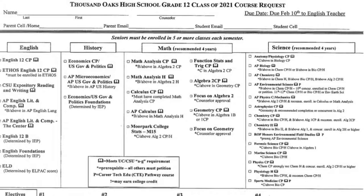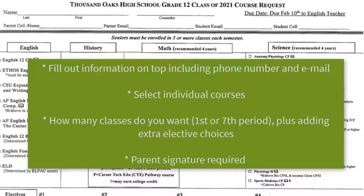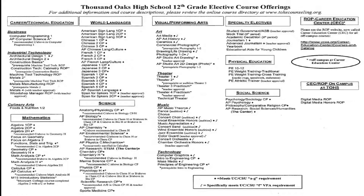Here is an example of a course request form. At the top of the form, please remember to include a phone number and email. You will then go through the form and choose your individual classes. 12th graders are required to have at least five classes; 9th, 10th, and 11th grade students are required to have at least six classes. You must have your parent sign this form and return it to your teacher on the due date. This form will be turned in addition to your individual meeting with your counselor. The back of the course request form has all of the electives that are offered to you per individual grade level.